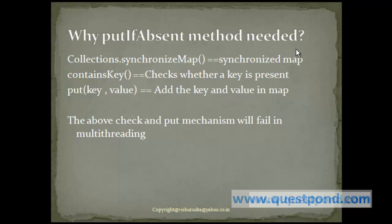Let's take for example two threads trying to access this particular piece of code. Thread1 and thread2 try to first access the containsKey. Since it is synchronized in nature, thread1 gets access to this particular method and invokes containsKey, following which it goes to put the key and value. Now before it does, the other thread can also get access to containsKey, since the first thread has already left the containsKey method. When it checks containsKey again, the key is not present, so it will wait for the put operation of thread1 to complete, following which it can again insert the same key within the map with a different value. This can cause undesirable results.